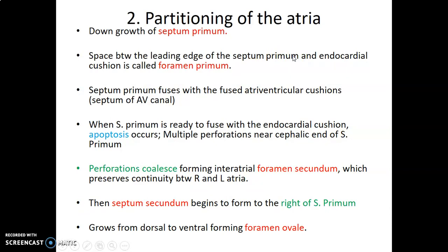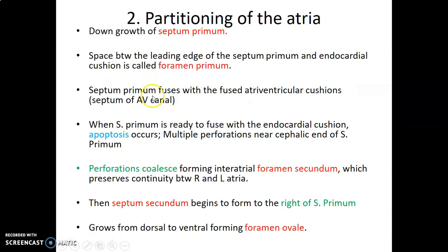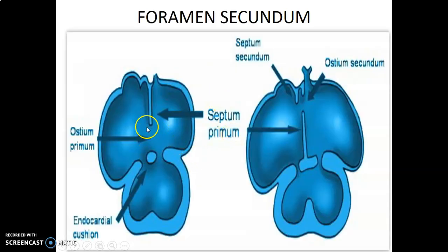After developing the atrioventricular canal, we now partition the atria. From the upper portion of the heart there is a downgrowth — the primary septum, or septum primum — growing downward from the roof toward where the endocardial cushions are meeting. Before the septum primum reaches the endocardial cushion, a space remains, called the foramen primum or ostium primum. It continues growing down until it meets the endocardial cushion.